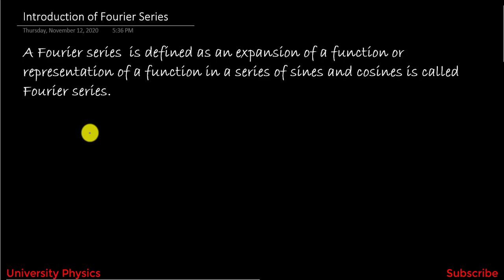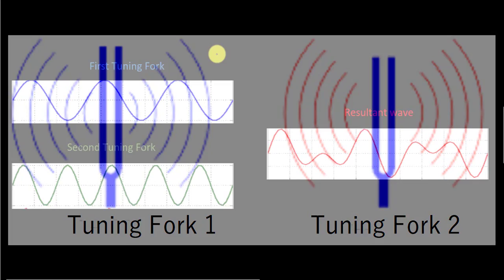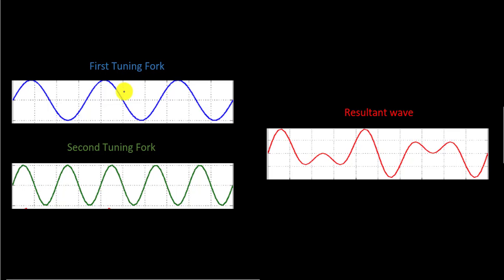For example, we have a vibrating body like a tuning fork. When a tuning fork vibrates, sound waves in the form of sine waves and cosine waves are generated. If we have two tuning forks of different frequencies and they vibrate simultaneously, then after vibration sine waves will be produced. We will observe that both waves have different frequencies. When these waves superimpose each other simultaneously, a resultant wave will be produced. This resultant wave is a combination of two sine waves.